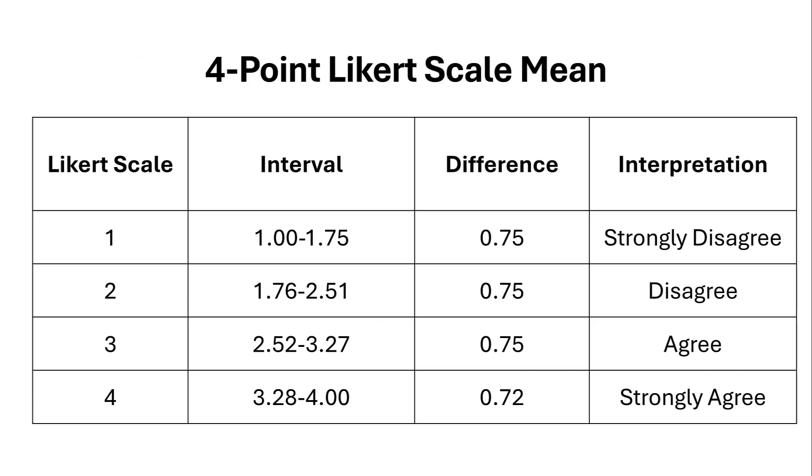These are the different thresholds. We have Likert scale from 1 to 4, and the interval from 1.00 to 1.75 with a difference of 0.75 refers to strongly disagree. It's important to code negative values with lower codes so that the higher the mean score, the more positive the interpretation is.